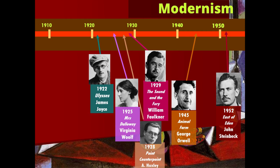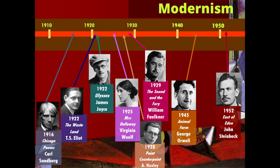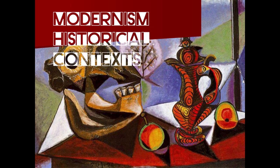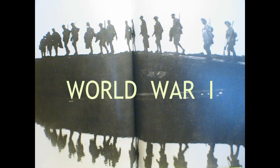Outside of the fictional tradition of novel writing, in the poetic tradition, the major work — The Waste Land by T.S. Eliot — was published in 1922. In America, the modernist tradition in poetry is closely related with Carl Sandburg, who published his Chicago Poems in 1916. Now let's take a look at the historical context of modernism.